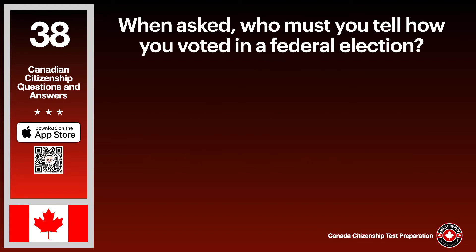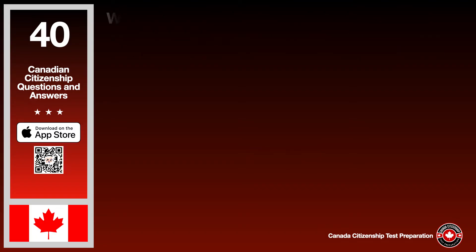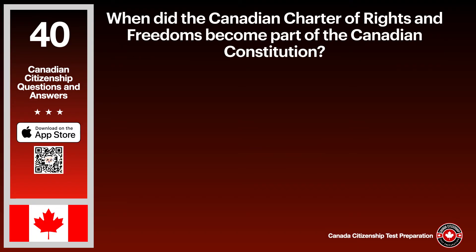What should you do if you do not receive a voter information card? The answer is call Elections Canada or visit their website. When asked, who must you tell how you voted in a federal election? The answer is no one. When did the British North America Act come into effect? The answer is 1867.